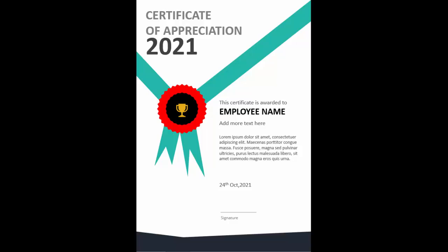In today's tutorial I'm going to show you how to create a four-size ready-to-print certificate design in PowerPoint. I have created this design — a very beautiful and elegant design with a ribbon here. I've added some icons and you can type the certificate name here, 'Certificate of Appreciation', which is completely editable. This certificate is awarded to you — you can change the employee name and add more details. At the bottom you can add the date and signature, and on the left side you can add your company logo.